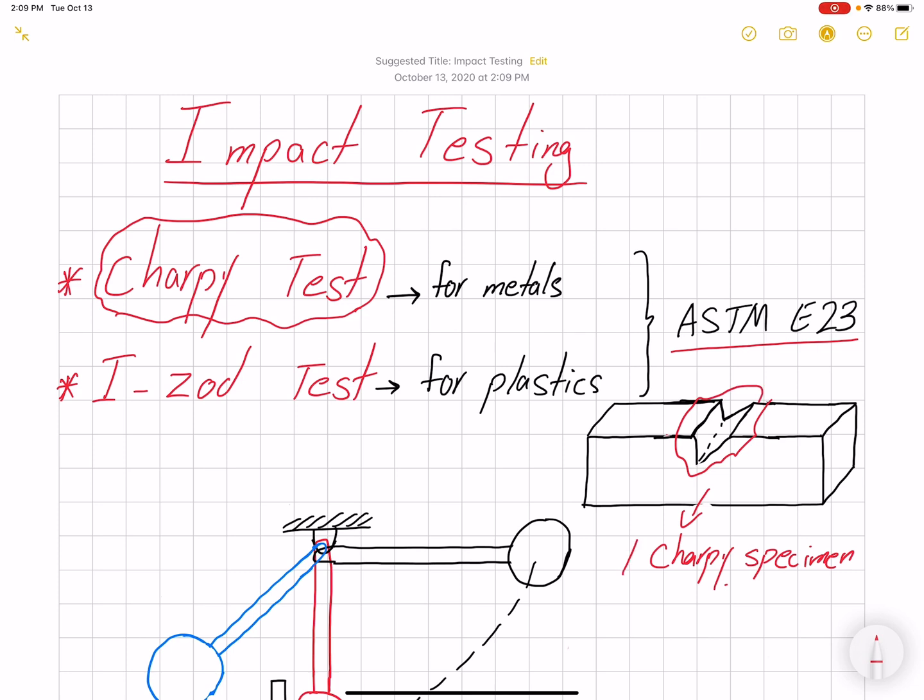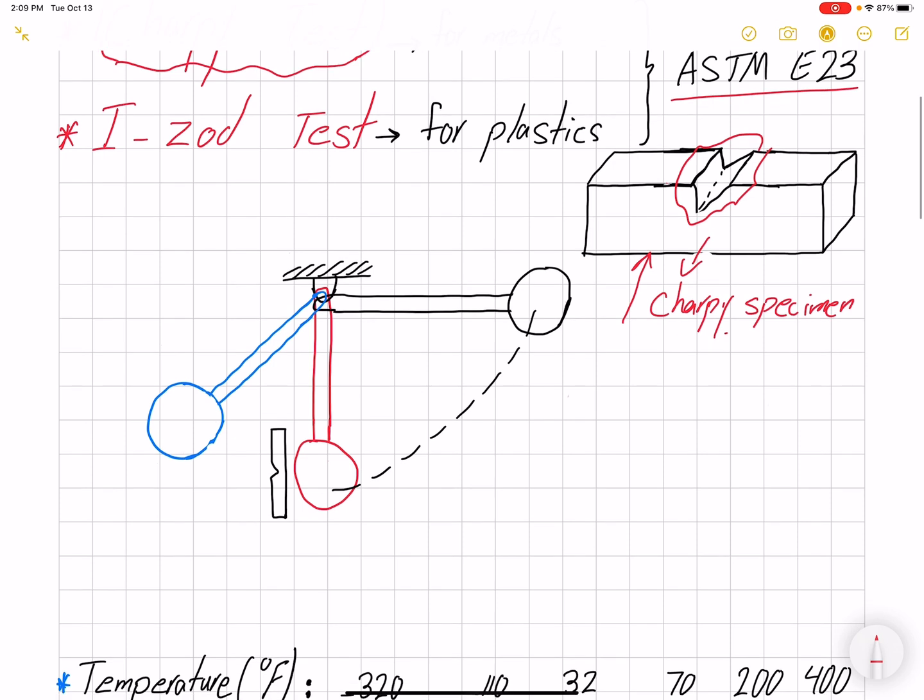The test procedure uses a pendulum with mass M, released at height h (let's call it h1). By the time it gets to the specimen, it has velocity. Let's call this condition one.